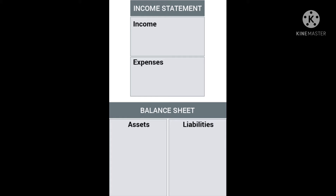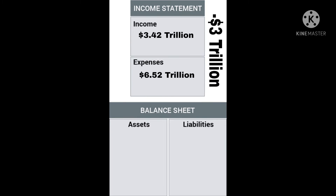Debt is added to the liabilities column because sooner or later the government will have to pay the debt it has taken from other countries. We come to know the cash flow of a country by looking at the income statement, and we come to know the debt-to-GDP ratio by looking at the balance sheet. After analyzing the income of $3.42 trillion and expense of $6.55 trillion of the US economy, we come to know that...